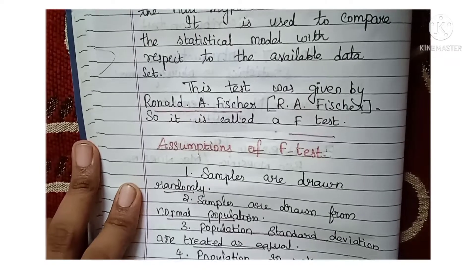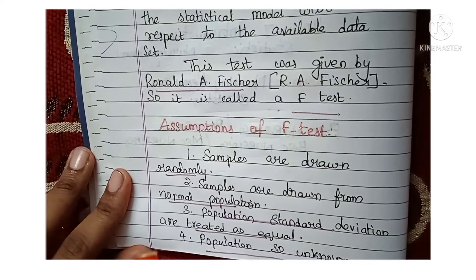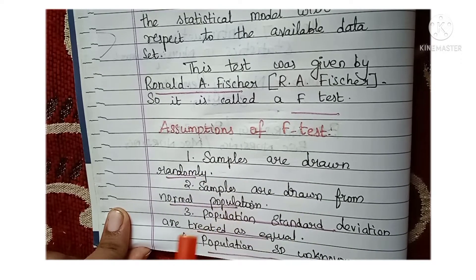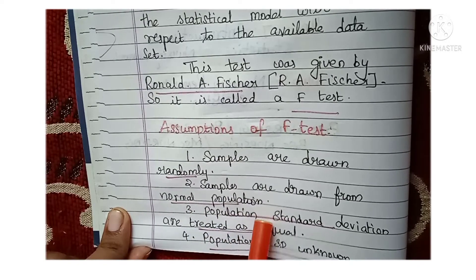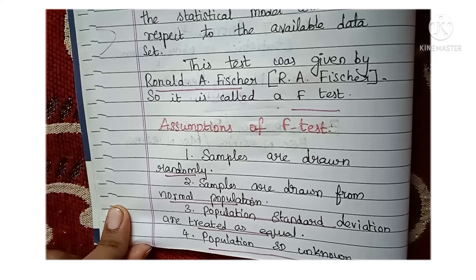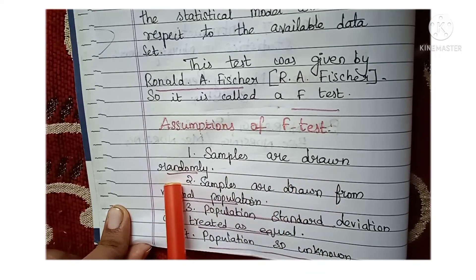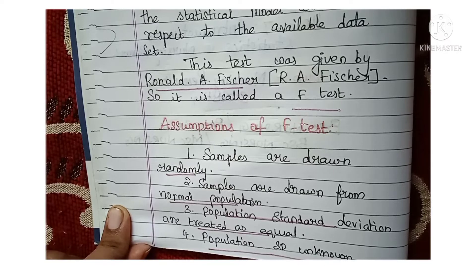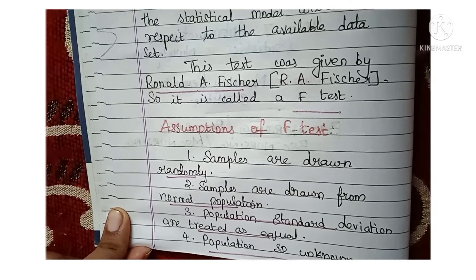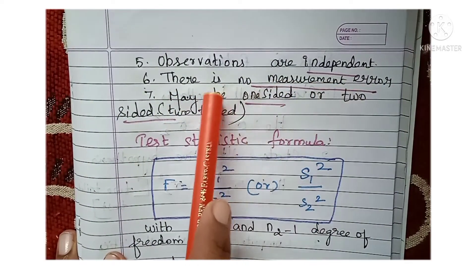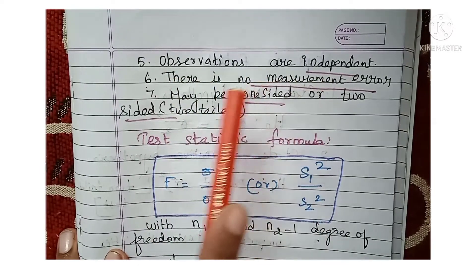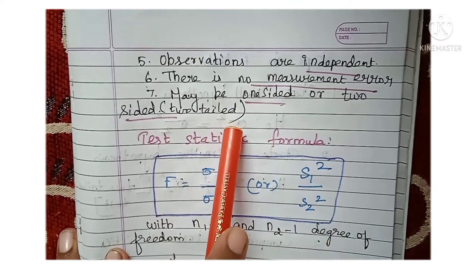Next, we will see the assumptions of F-Test — mostly they will be asking this in 5-mark questions. The assumptions are: the samples are drawn randomly; the samples are drawn from a normal population; the population standard deviation is treated as equal; and the population standard deviation is unknown. Additionally, observations are independent; there is no measurement error; and it may be one-sided or two-sided, that is one-tail or two-tail distribution.